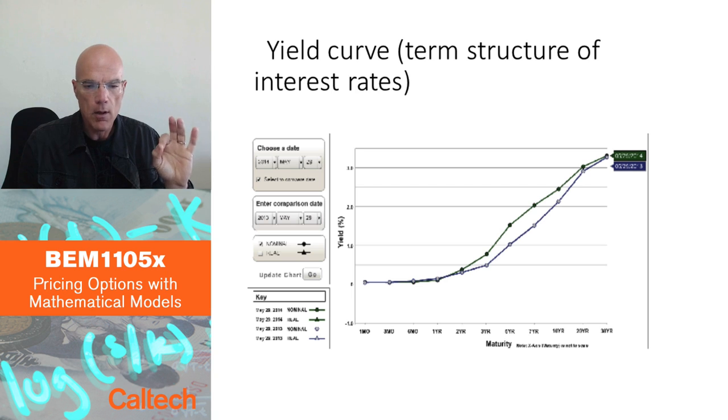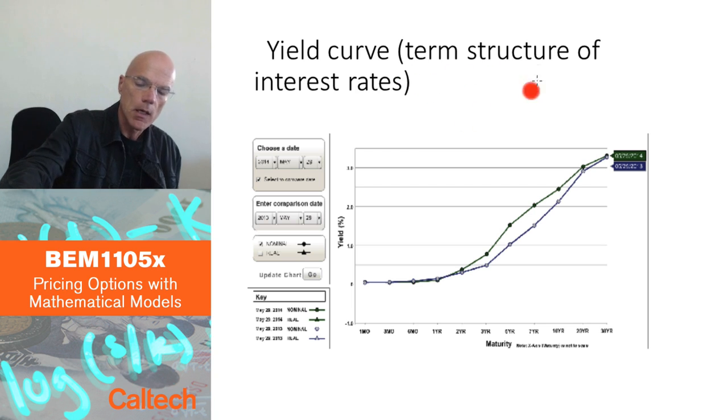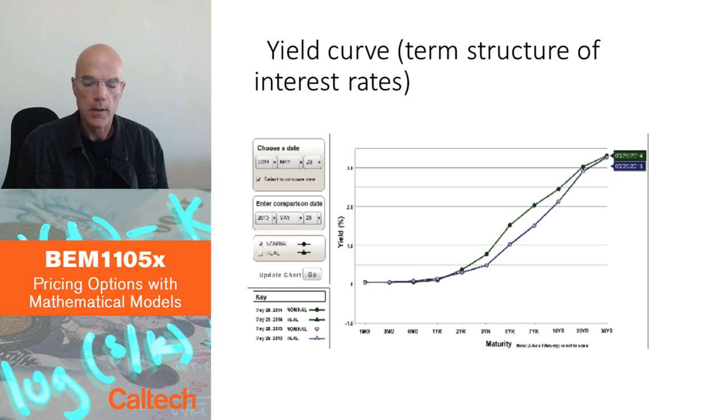This is called the yield curve, or sometimes also called the term structure of interest rates. The term meaning dealing with time, the maturity of the bonds. How the yield varies with maturity from the point of view of today. This is what we are going to try to model at the end of the course.